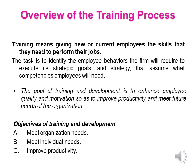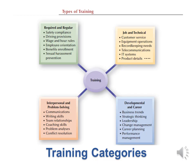Training efforts help to achieve the organization's needs, individual needs, and to improve productivity. The organization may provide employees with different training categories: required and regular training for safety, wages and hours rules, employee orientations, and benefits. The second category may be interpersonal and problem-solving training, such as communication skills, writing skills, team relationships, coaching, and problem analysis. The third category is job and technical training, and the fourth is development and career training.